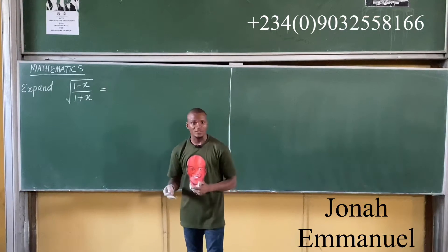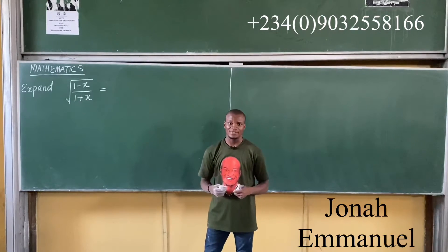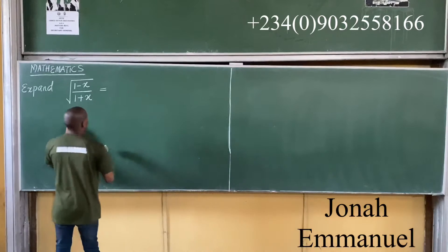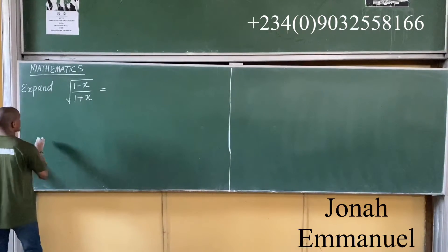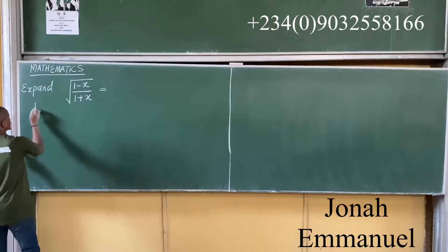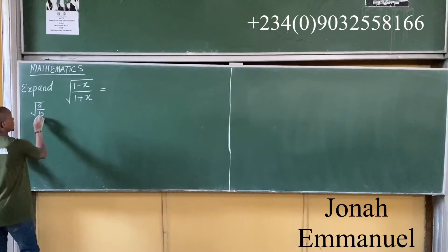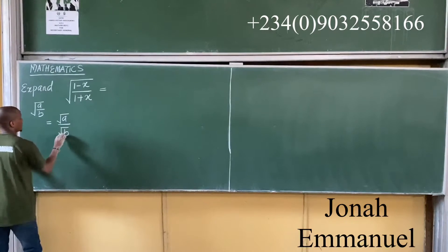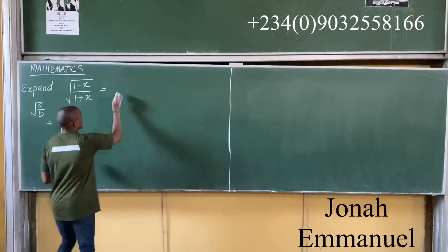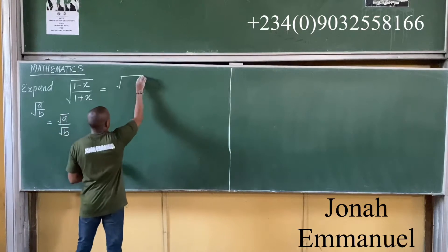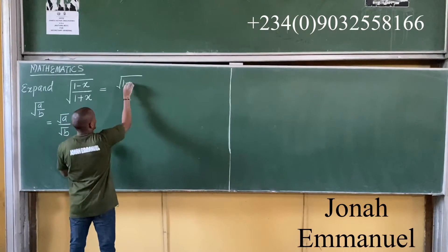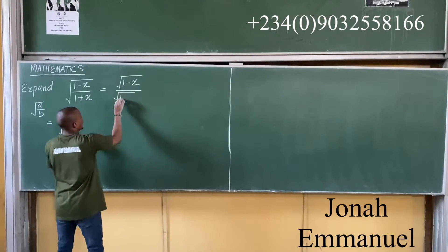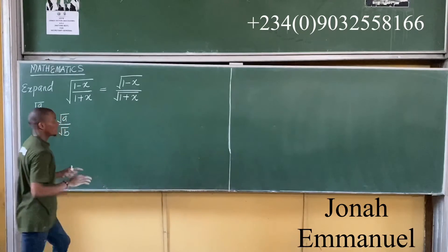The first concept is to express your things in index form. But before then, from the idea of indices, we know that the root of a over b can be written as root a all over root b. That means I can rewrite this as the square root of the numerator (1 minus x) all over the square root of the denominator (1 plus x).